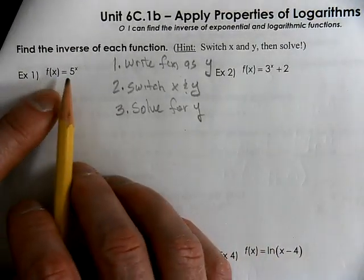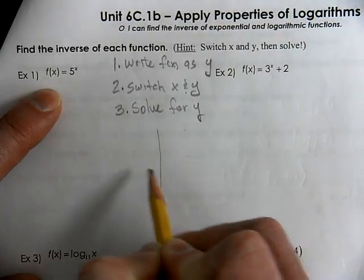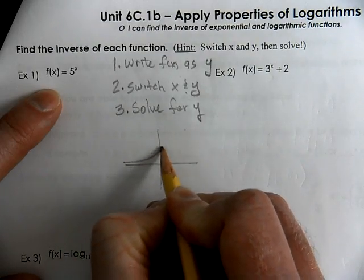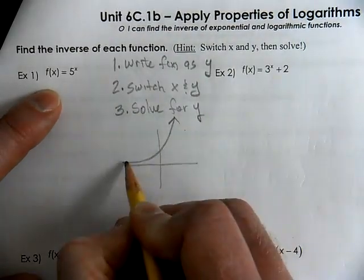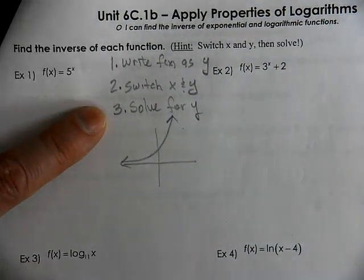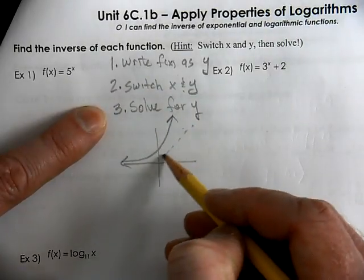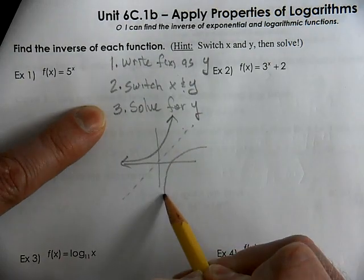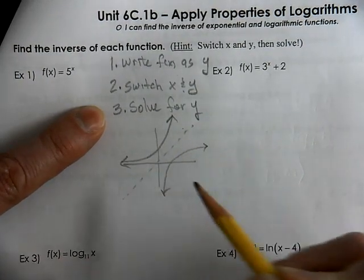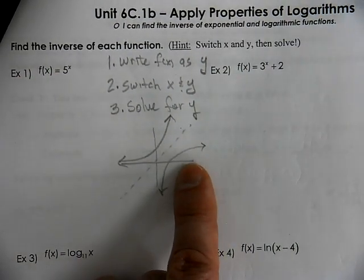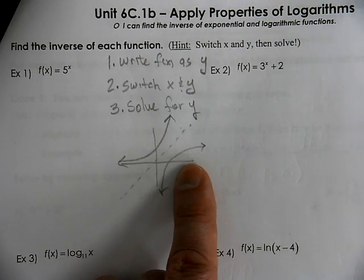It's going to be reflected. For example, this is exponential — exponential growth. By switching the x and y and solving, we are going to reflect all of those points over the line y equals x. What type of graph might this be? It would be a logarithm.